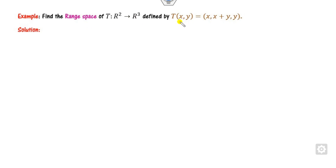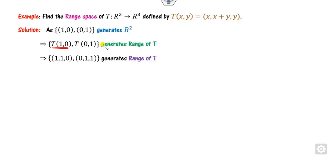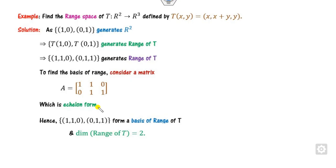Look at one more example. Again a transformation is given, this time from R2. Start from the standard basis of R2. Compute T(1,0) = (1, 1, 0) and T(0,1) similarly. Convert to matrix form; in this case it is already in echelon form. The first and second rows form the basis of the range space, so the dimension is 2. This is the way you find the range space and its dimension.